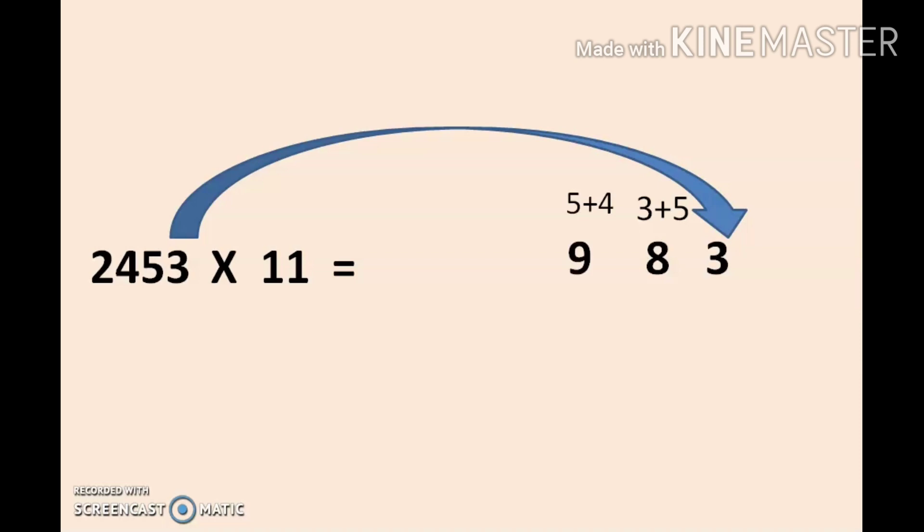Next, we add 4 with 2, so we get 6. Next, we have only 2, so we write it as it is. So 2453 × 11 equals 26983. At first, it seems to be difficult for you, but if you practice for two or more problems, you will find that this method is a very time-saving method.